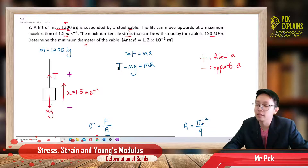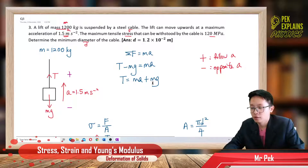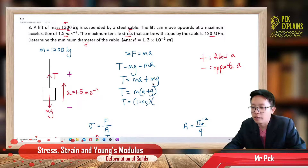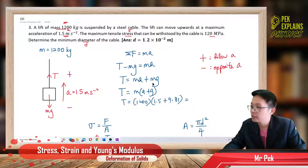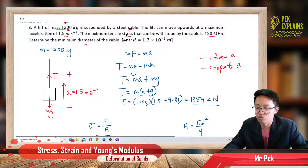From here, first I need to find the tension. Applying Newton's second law: T − mg = ma. Rearranging, tension equals m(g + a). Mass can be factored out. So tension = 1200 × (9.81 + 1.5), which gives 13,572 newtons. That is the tension in the steel cable, and this tension will cause the stress in the cable.